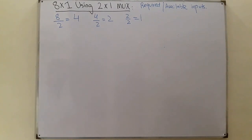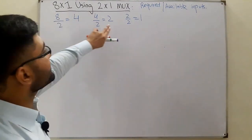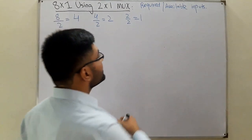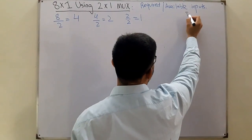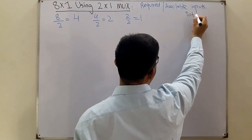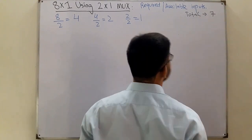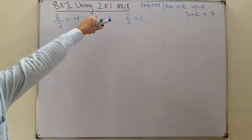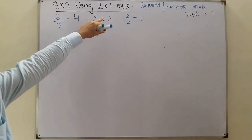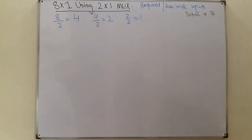So what does this tell us? We need a total of 4 plus 2 plus 1, which is 7. So you need a total of 7 2x1 multiplexers to implement a single 8x1 multiplexer.